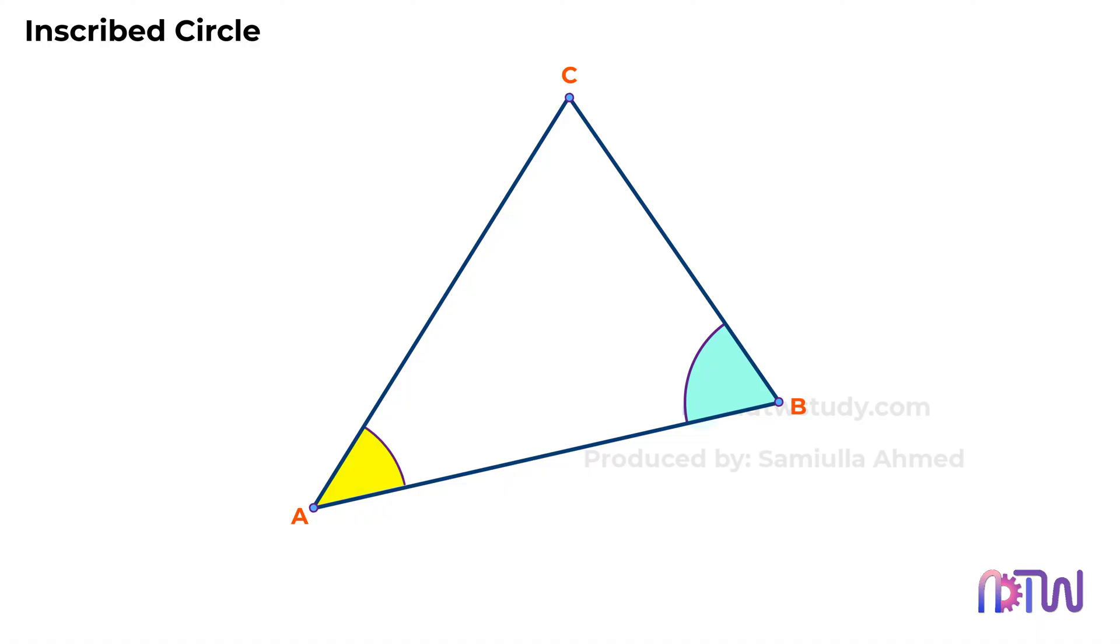First, we'll divide the angle at edge point A of the triangle. To do so, take a compass, adjust it to some length, and by placing at point A, draw the arc as shown.